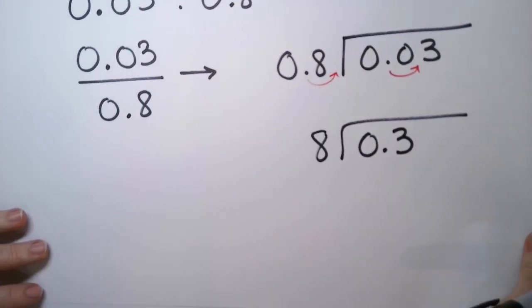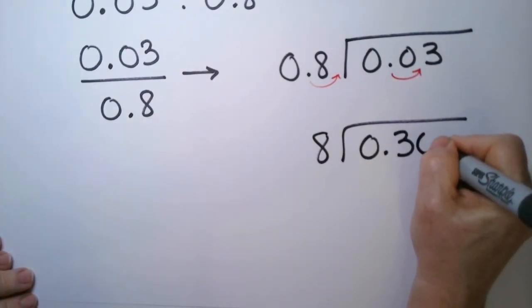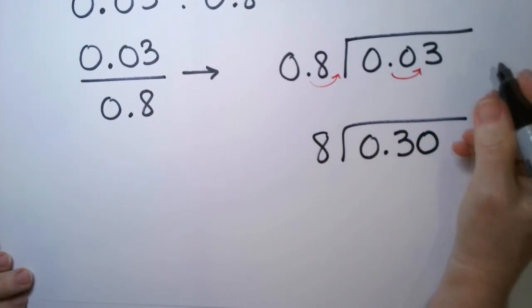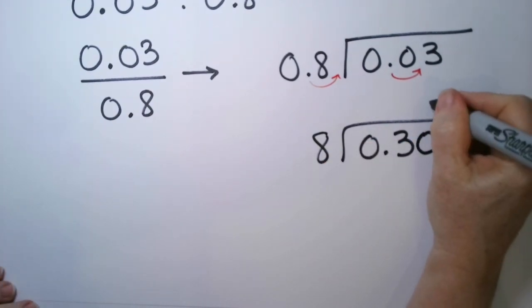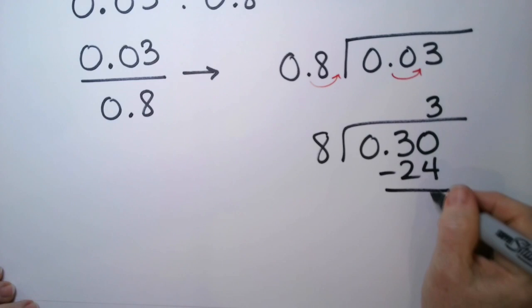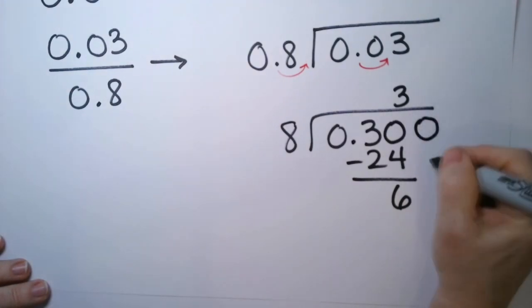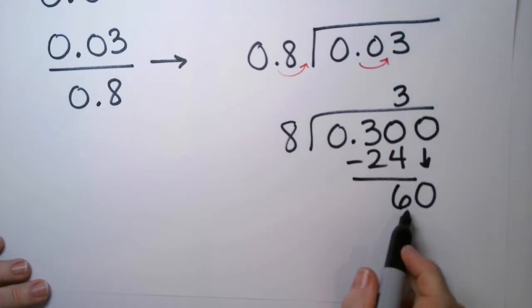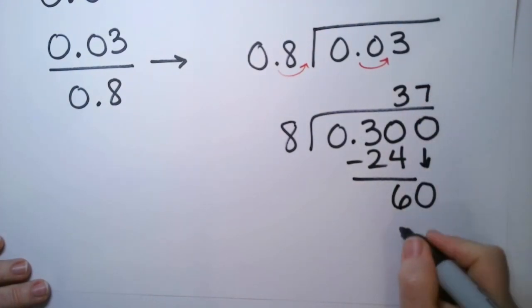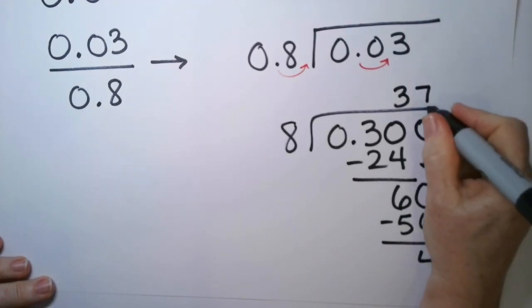So 8 doesn't go into 0. 8 doesn't go into 3 either. So now we're going to start adding 0's. 8 goes into 30. It goes in 3 times. Minus 24. And I have a difference of 6. And then what do we do? Well, we keep adding 0's until we have enough decimal points. 8 goes into 60, 7 times. Minus 56. And we have a 4 left over. So let's just add another 0.